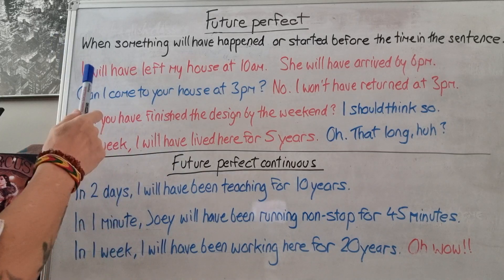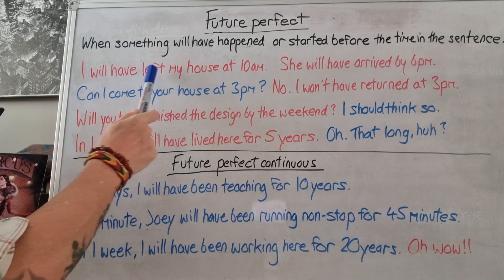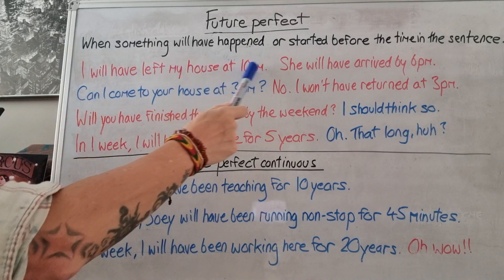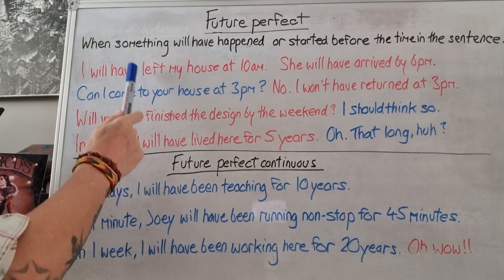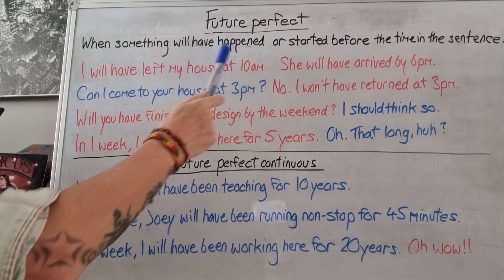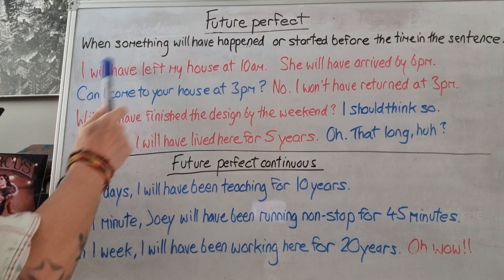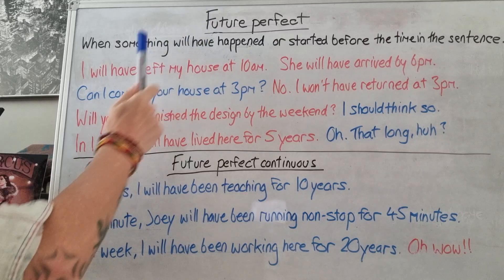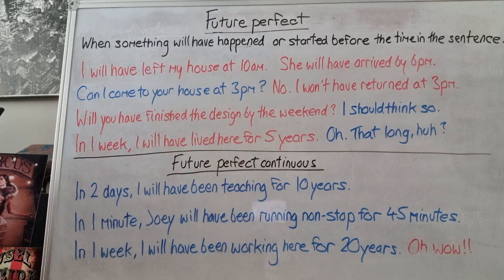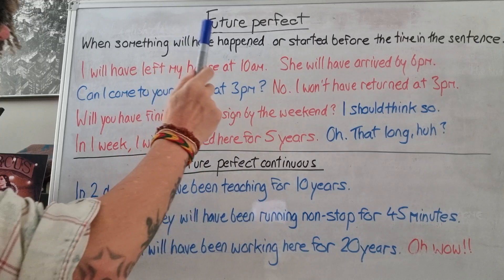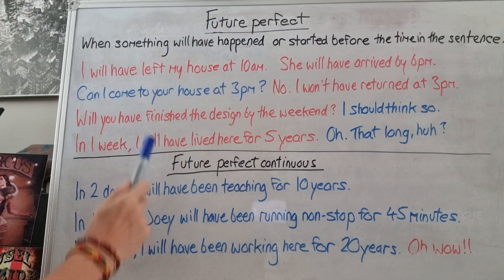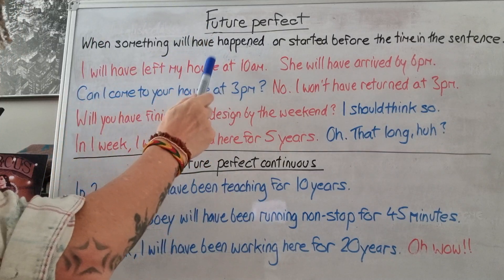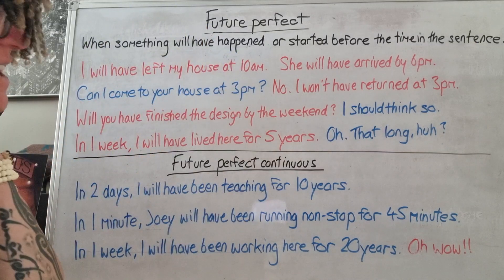Let's look at some examples. 'I will have left my house at 10 a.m.' — which means I'm leaving my house before this time. 'Will have left' — leave, left, left. So don't come to my house at 10 a.m. because I'm leaving before 10 a.m. 'I will have left my house at 10 a.m.'